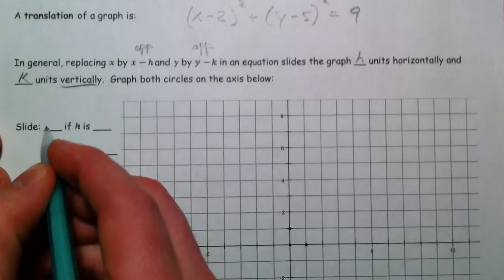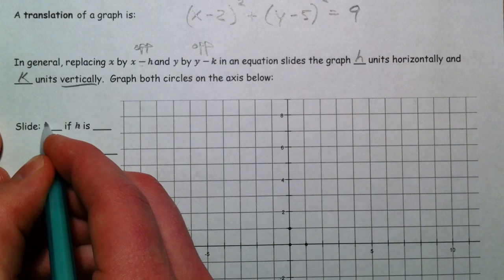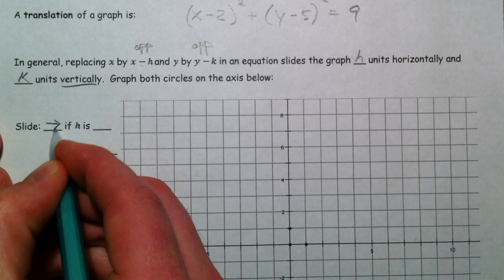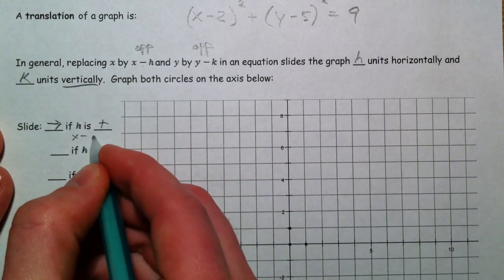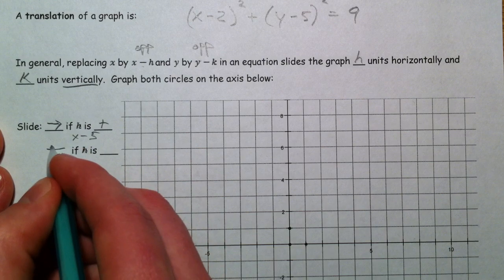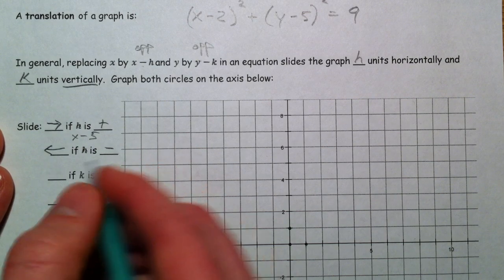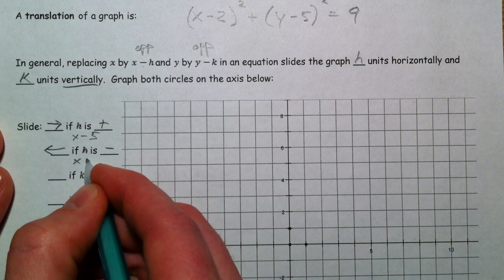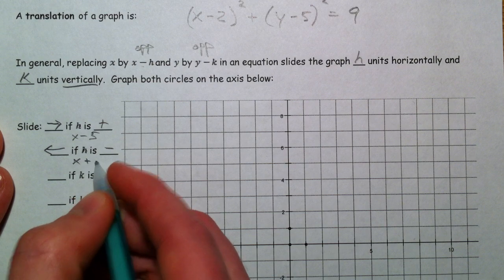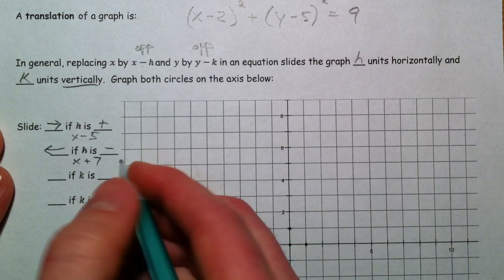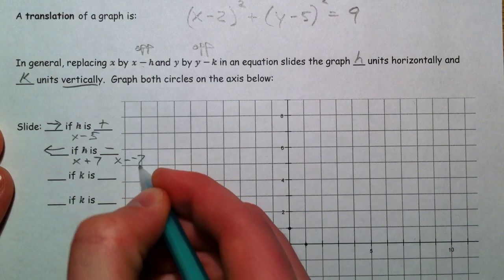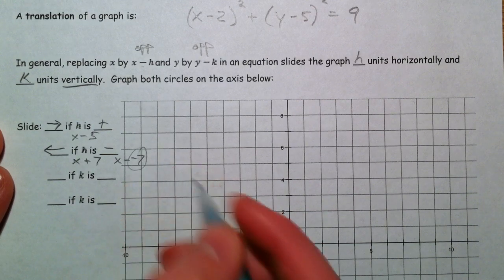So, slide to the right if h is positive. So if it's x minus 5. Slide to the left if h is negative. So x plus 7. What that's coming from is x minus a negative 7. So it's x minus h, so negative 7.